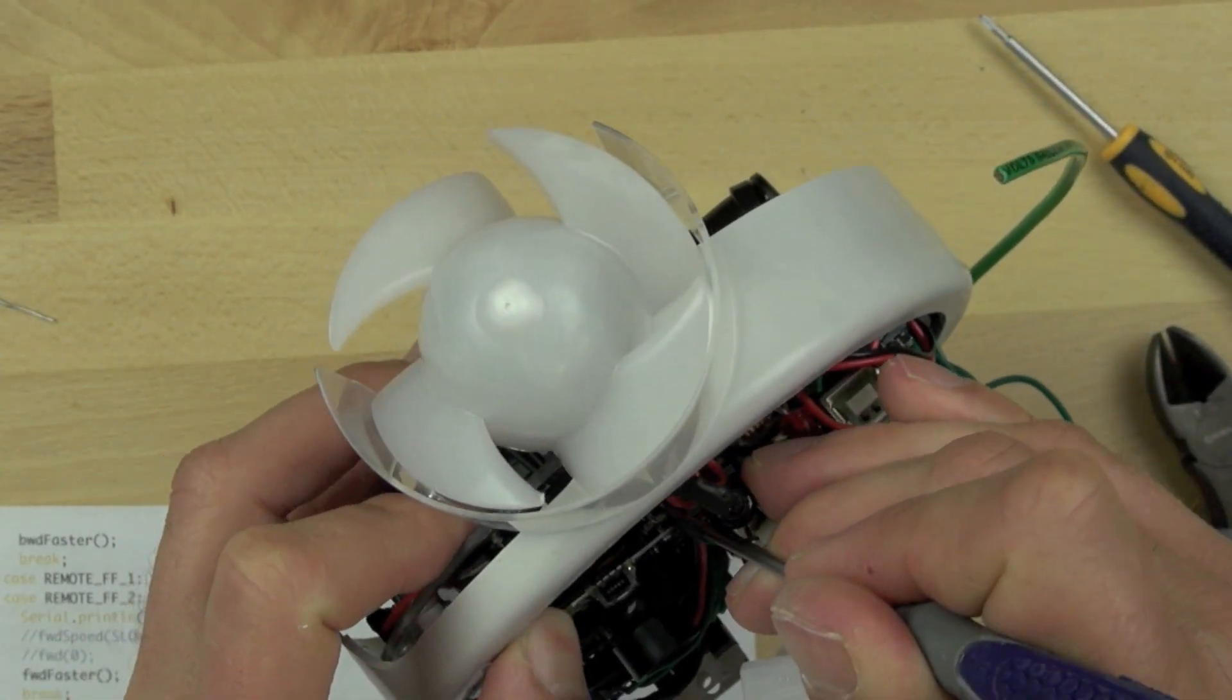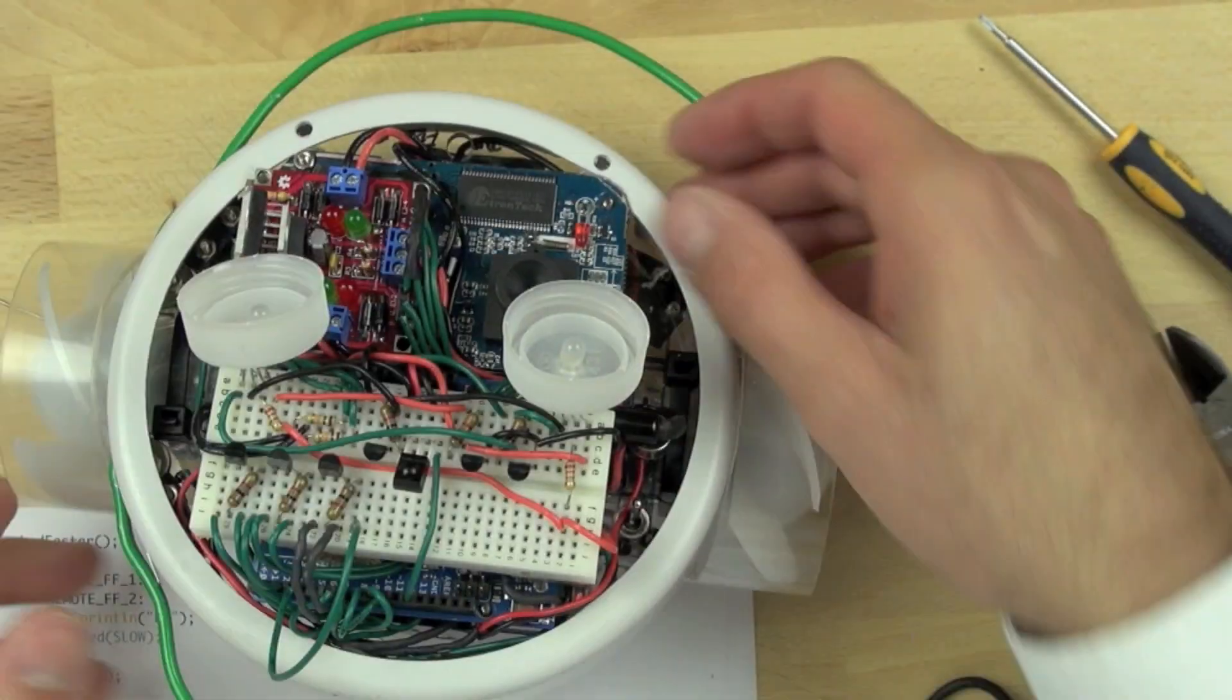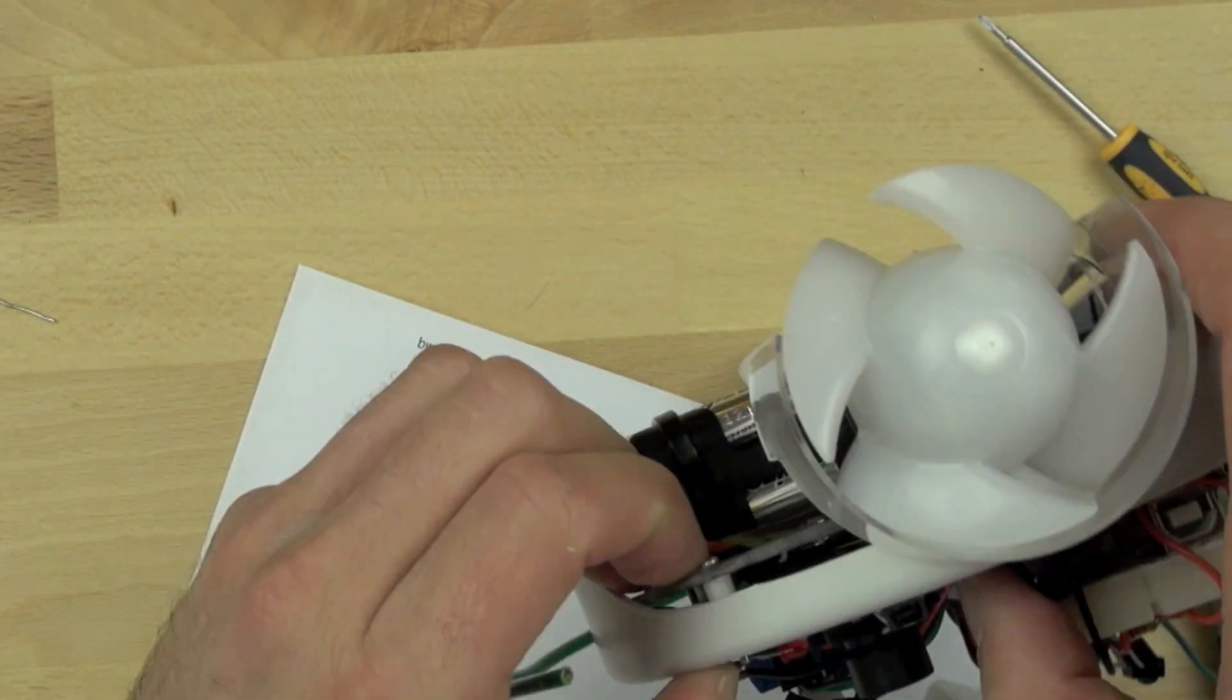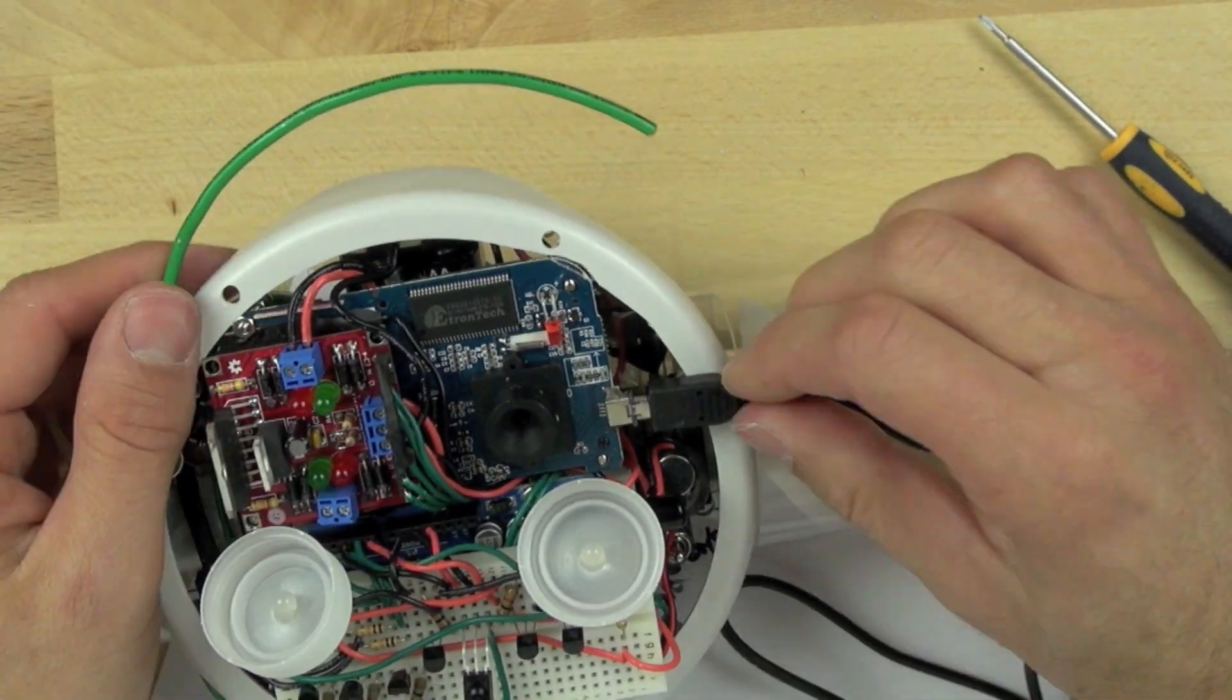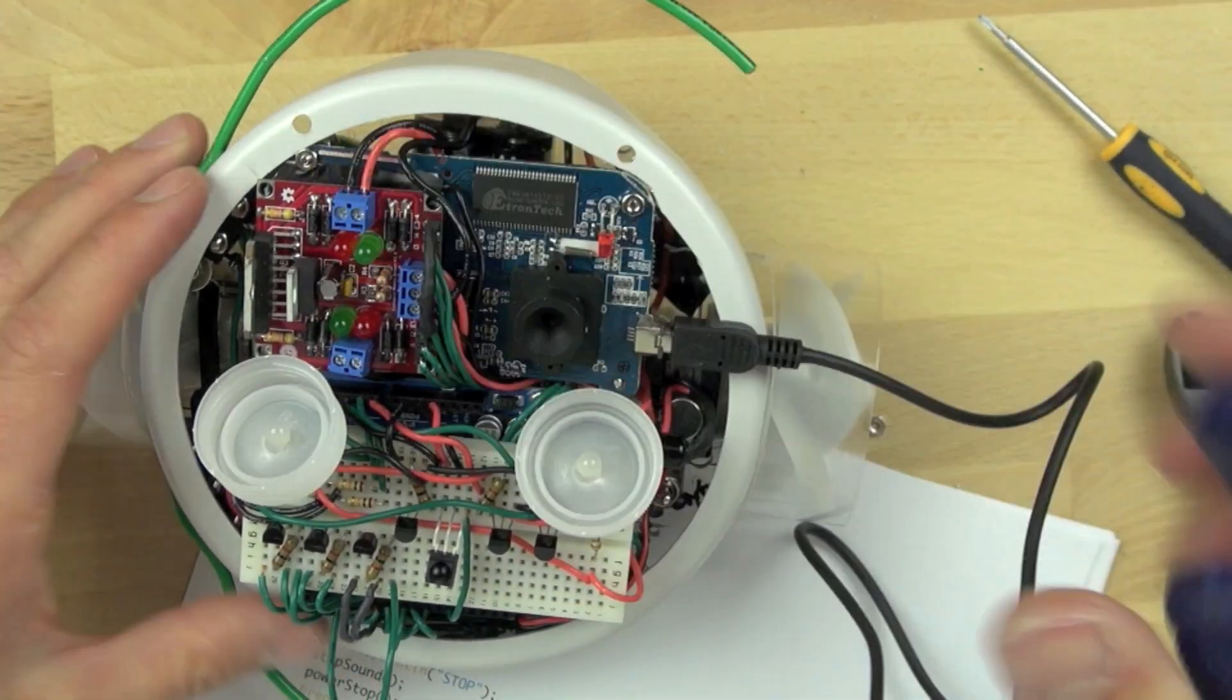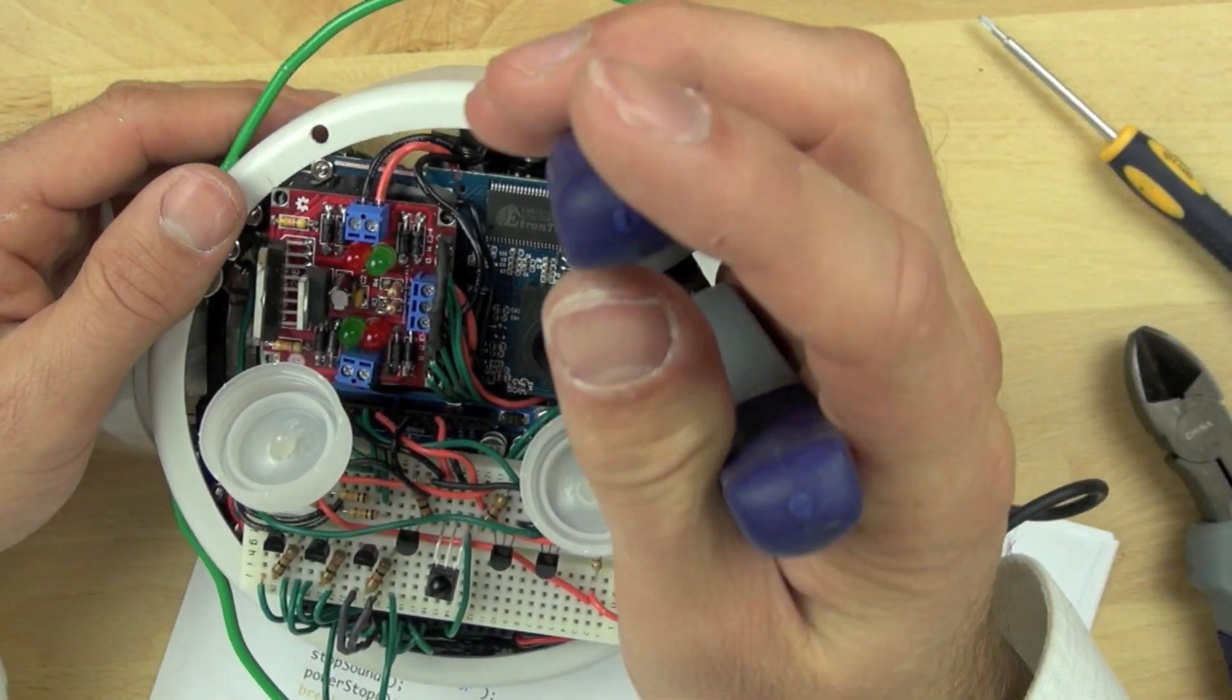And then we'll verify that the camera can be connected to the micro USB cable. And it can, so that's good. And so now we're just going to put our nuts back on the camera, tighten it down, and we should be good to go.